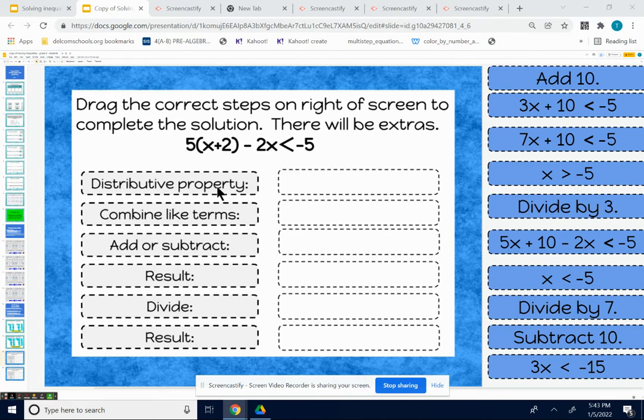So the first thing to do is look for the distributive property if you have parentheses, and we do. We have parentheses, so we need to multiply. 5 times x is 5x. 5 times 2 is 10. So we want to look for 5x plus 10 with the rest of the problem exactly the same, which would be this one right here. If I can grab it.